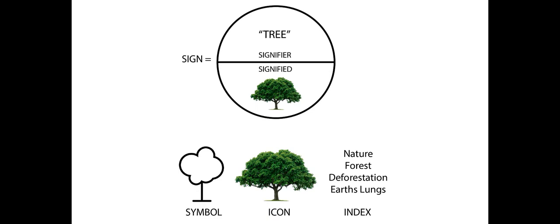He's basically studying the signifier — which is the word 'tree' — and then the signified, what I think of when I say 'tree.' He's really interested in symbols and icons. When I say tree, I think of a particular kind of tree, like the oak in our front yard. That's the icon — what I see in my mind. And then the index, which is the associated terms you often find when we talk about trees. He looks at why we think of different icons for the same word, and what other words we associate with something like 'tree.'